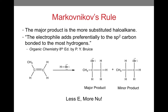Let's look at this example and first identify which carbon is more substituted. The sp2 carbon on the left has a methyl group and a hydrogen attached to it, while the sp2 carbon on the right has two hydrogens attached to it. Therefore, the sp2 carbon on the left is more substituted, and the other carbon is less substituted. When we look at the mechanism, it depends on carbocation stability. The major product gives a secondary carbocation, while the minor product gives a primary carbocation. Since a secondary carbocation is more stable than a primary carbocation, we get the major product.